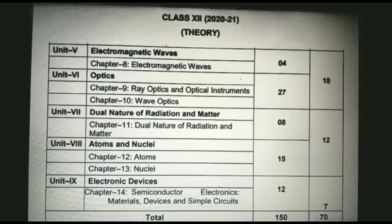Unit 7 consists of one chapter: Chapter 11 dual nature of radiation and matter. Unit 8 consists of two chapters: Chapter 12 atoms and Chapter 13 nuclei. The marks weightage for unit 7 and 8 is 12.